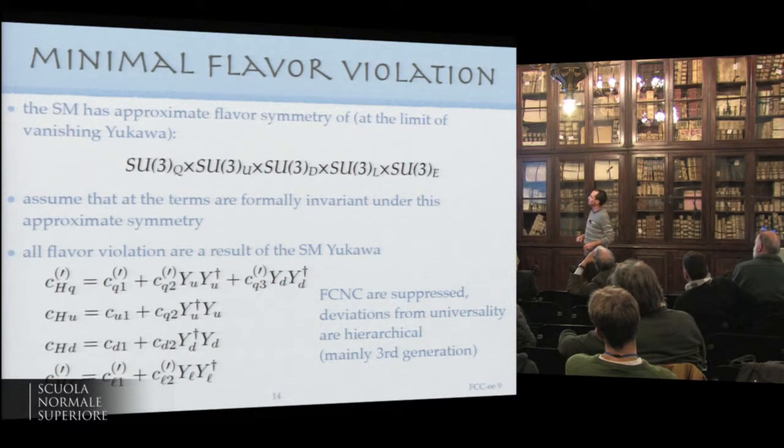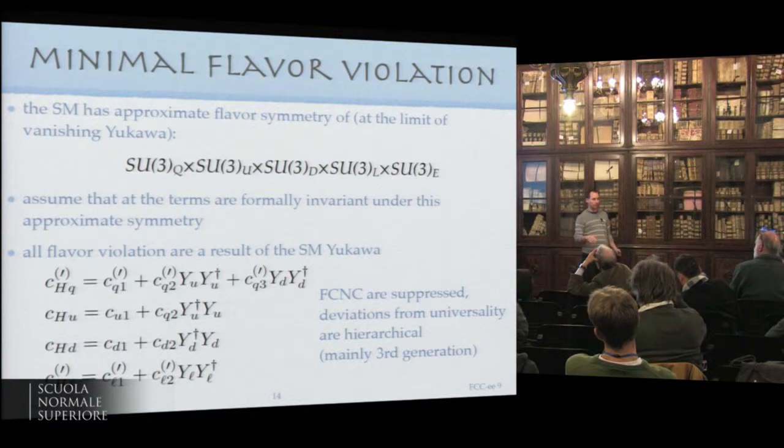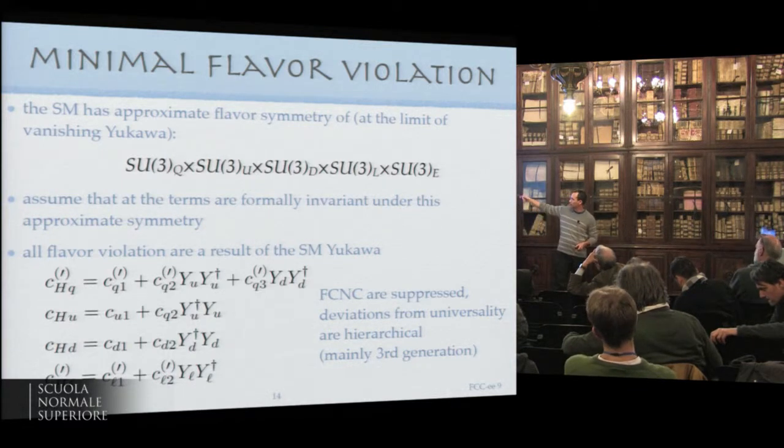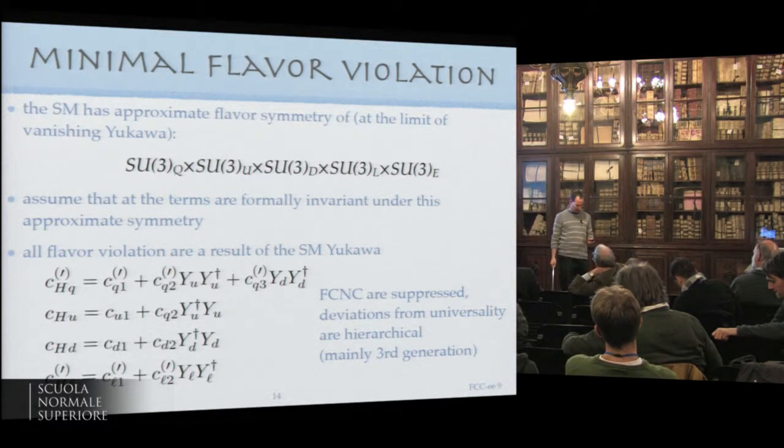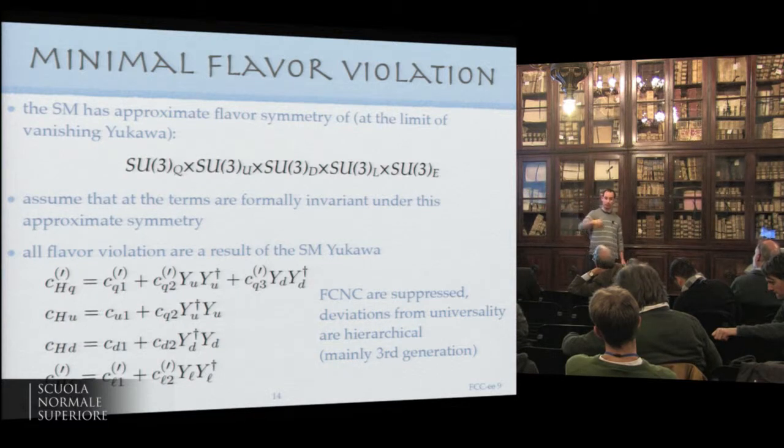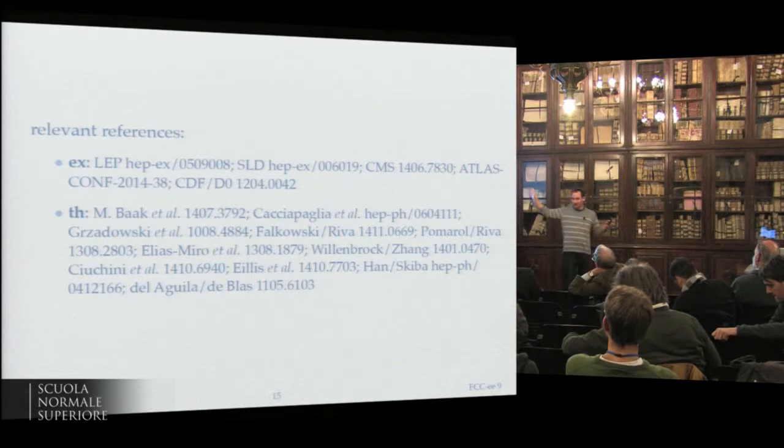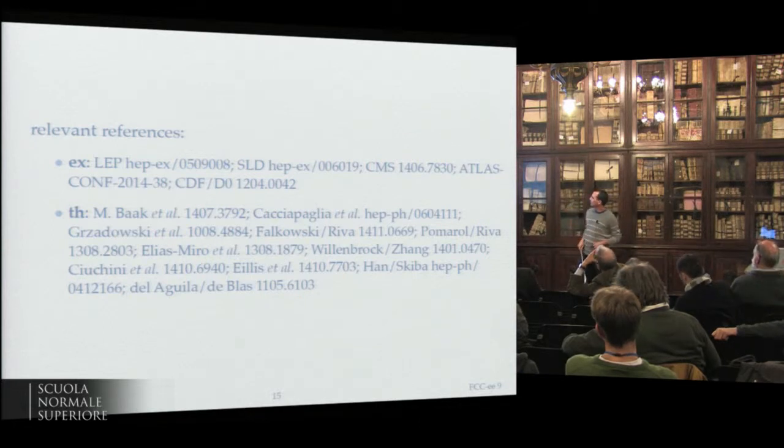We can do the same exercise for minimal flavor violation. The assumption on minimal flavor violation is that at vanishing Yukawa, the standard model obeys a huge global symmetry, and all deviations above it should be proportional to the Yukawa. This is the structure of the different Wilson coefficients for quarks, left-handed quarks, right-handed quarks, and leptons. The suppression will be much larger because it's not just the suppression of the CKM, it's also the suppression of the Yukawa itself which, besides the top, are small.